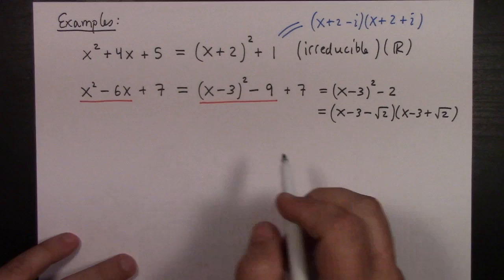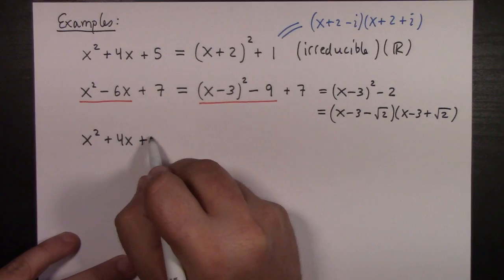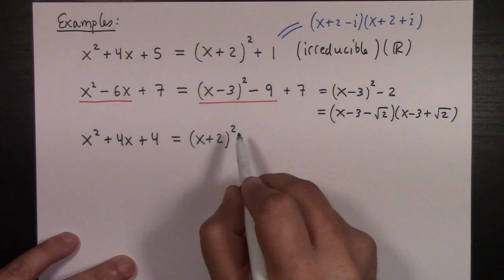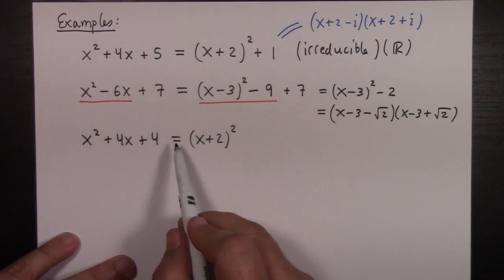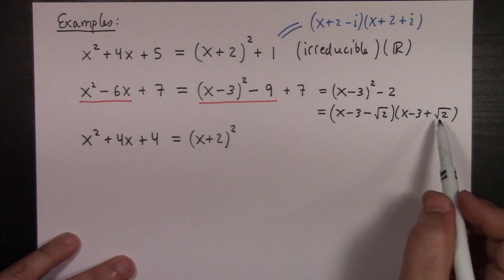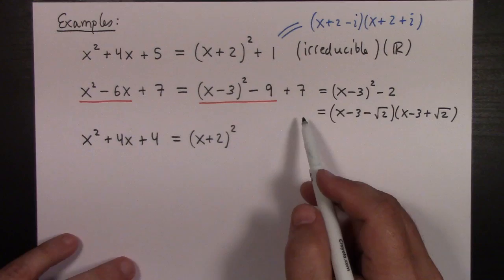Then, of course, the other thing that can happen is sometimes, when you're completing the square, you have something like x^2 + 4x + 4. So, you've got to complete the square. (x + 2)^2. But, how embarrassing, because when I complete the square, I have to subtract 4. I mean, in other words, this is exactly (x + 2)^2, so that's it. So, this is not irreducible. It's not like this either. There's two distinct real roots here. This one is the repeated case.